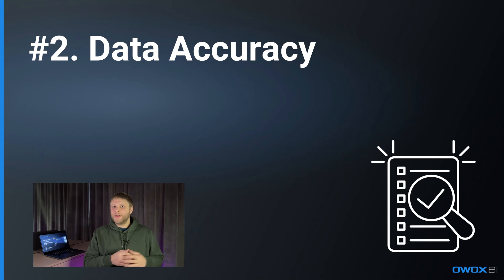Difference number two: data accuracy. Client-side tracking is like trying to paint a picture with missing colors — you are limited. Browser constraints and ad blockers chip away at your data, leaving you with an incomplete canvas. Server-side tracking gives you access to every color in the spectrum, all of the data available, so you get a richer, more accurate dataset for analysis. It's like switching from a sketch to a high-definition image. And when every dollar counts, accuracy is king.